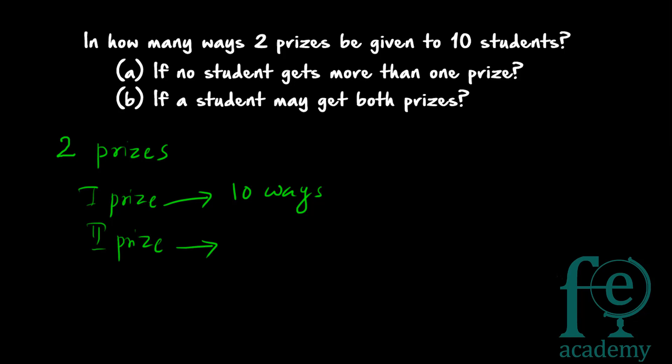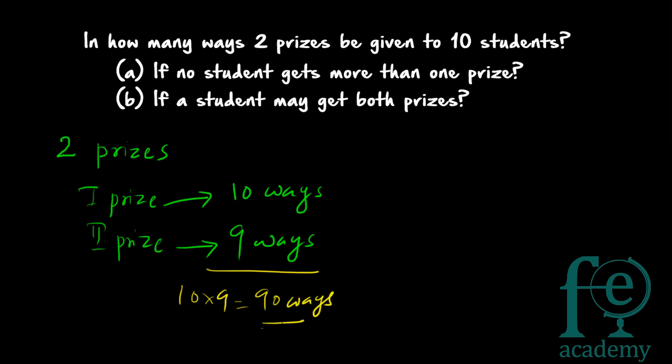So how many ways can the second prize be given? It can be given in 9 ways. The student who received the first prize is excluded, so only 9 students remain for the second prize. In total, 10 × 9 = 90 ways the two prizes can be given if no student gets more than one prize.